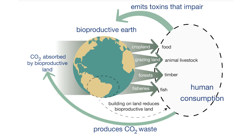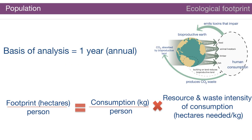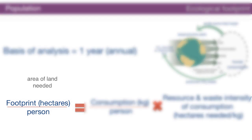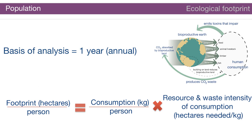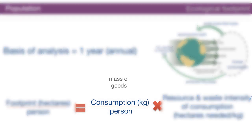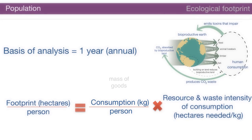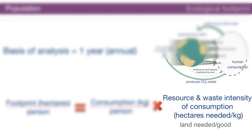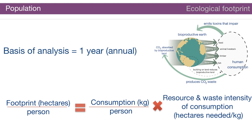The slide depicts the flows of primary resources and wastes within the ecological footprint computation. The ecological footprint is essentially an accounting method based on conservation of mass. For a basis of analysis of one year, the footprint per person, measured in hectares, equals the consumption in kilograms per person times the resource and waste intensity of the consumption — essentially hectares needed per kilogram of consumption.